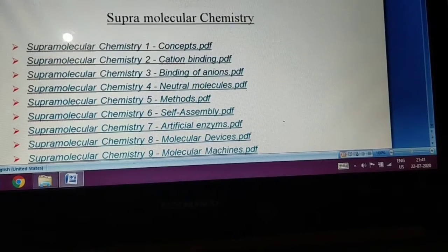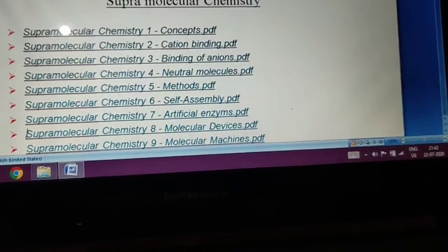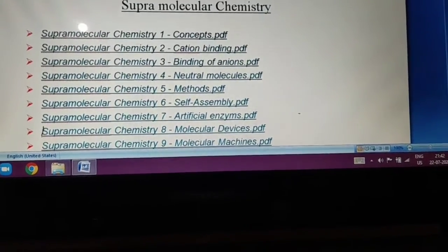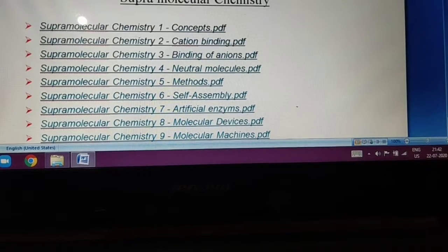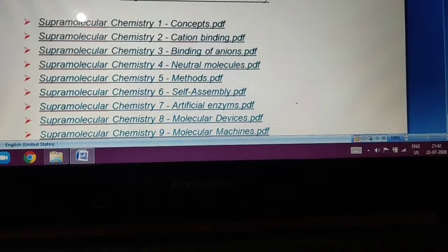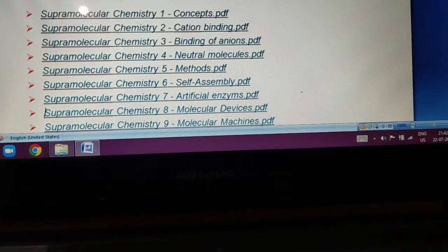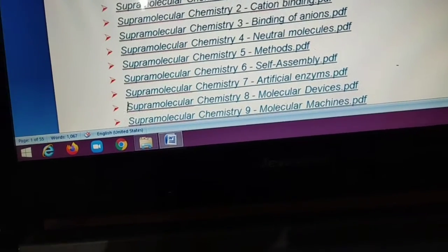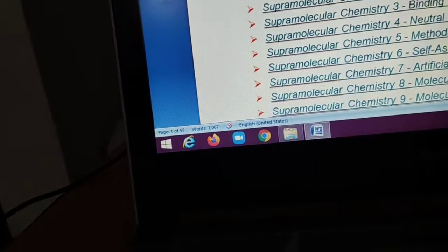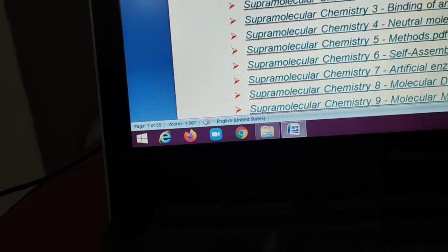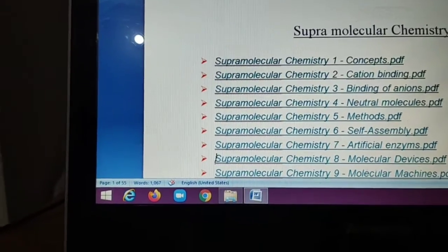Supramolecular chemistry, this subject divided in various categories. First is Supramolecular chemistry Concept and PDF. And second is cationic binding. Third is binding anion. Fourth is method. Five is natural molecules, self-assembly, artificial enzymes, molecular devices, molecular machines and so on.